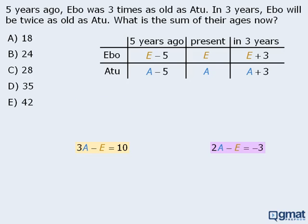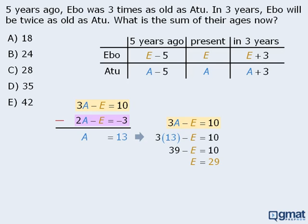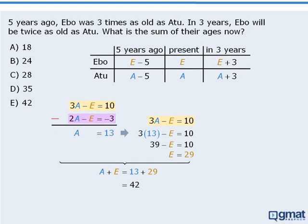So we now have a system of 2 equations with 2 variables. From here, if we subtract the bottom equation from the top equation, we get A equals 13. We can now use this value of A to find the value of E. If we take one of our equations and replace A with 13, we can see that E equals 29. Since A and E represent the present ages of Attu and Ibo, we can now find the sum of their ages. This equals 13 plus 29, which is 42, so the answer is E.